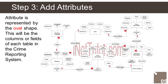The Crime Information entity has the following attributes: 1. Crime ID — primary key, represented with underline, 2. Crime description, 3. Resident ID — foreign key, 4. Date reported, 5. Time reported, 6. Location, 7. Image capture, 8. Status.